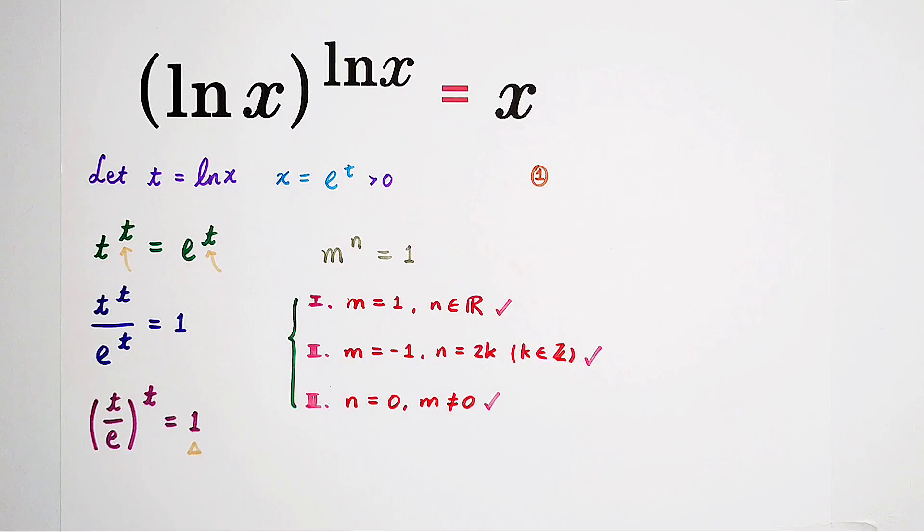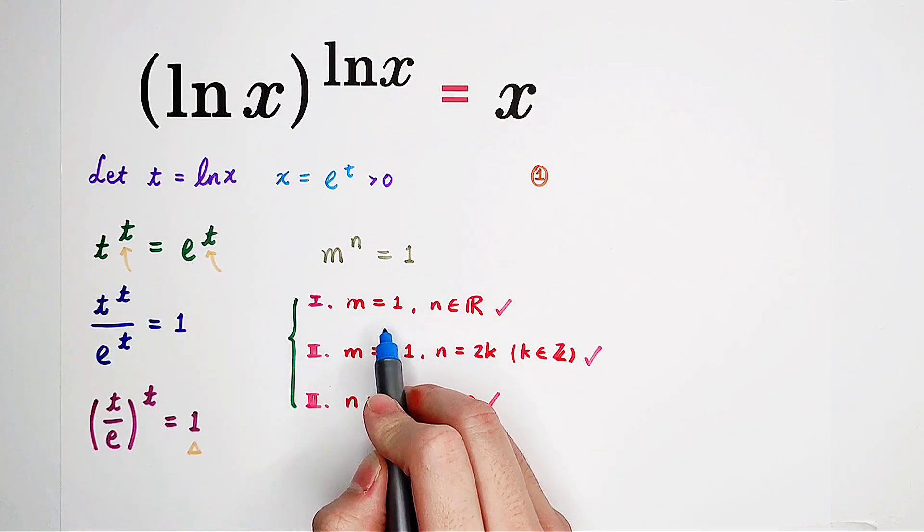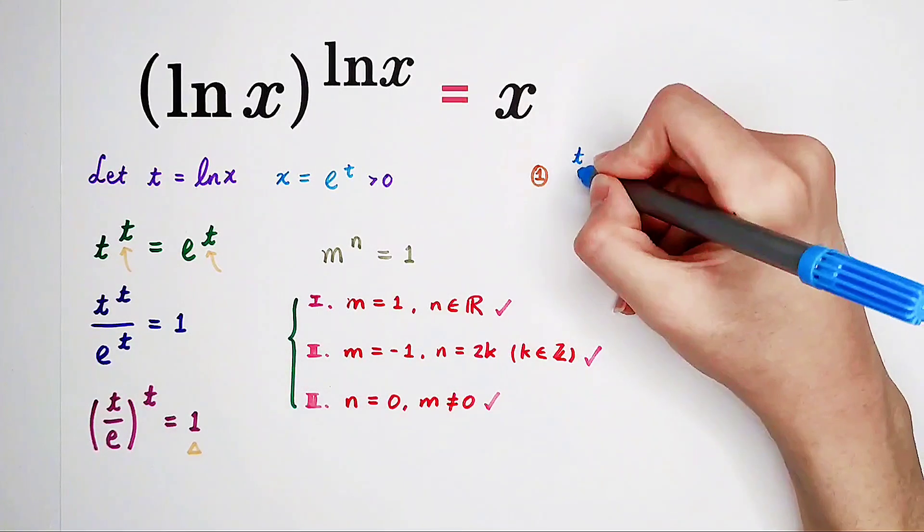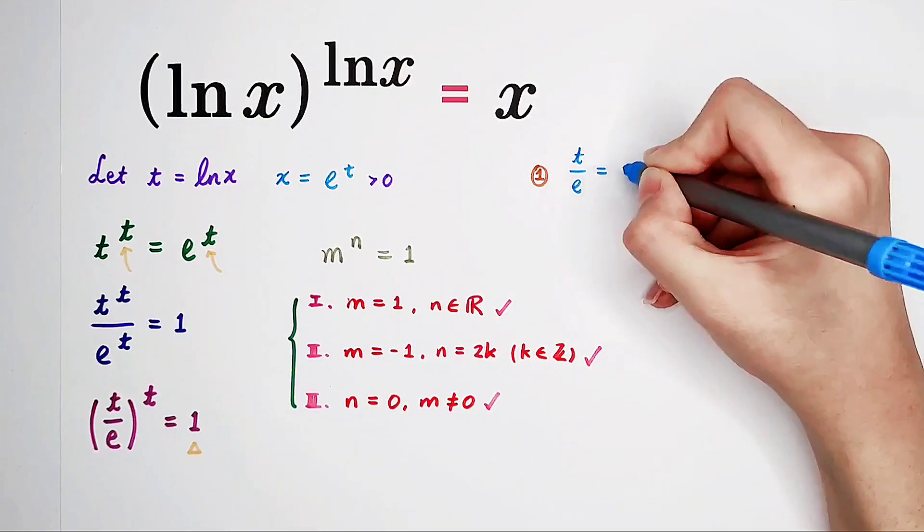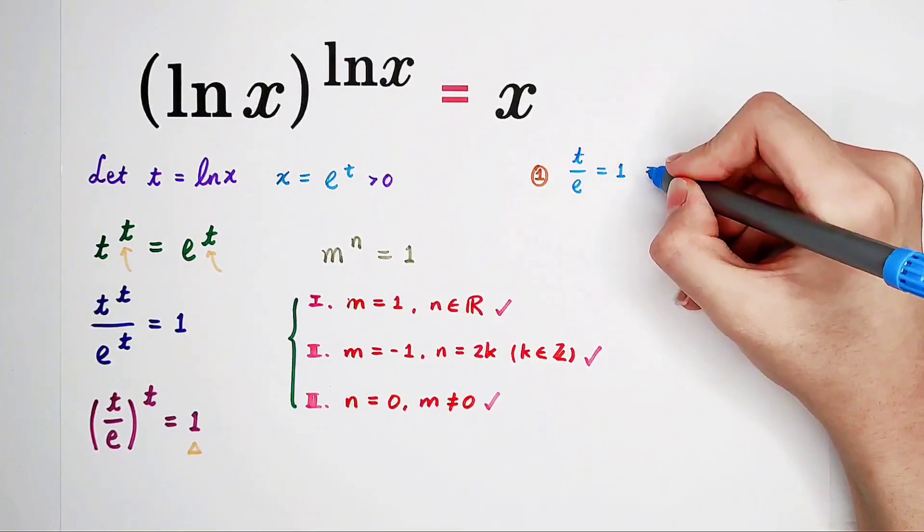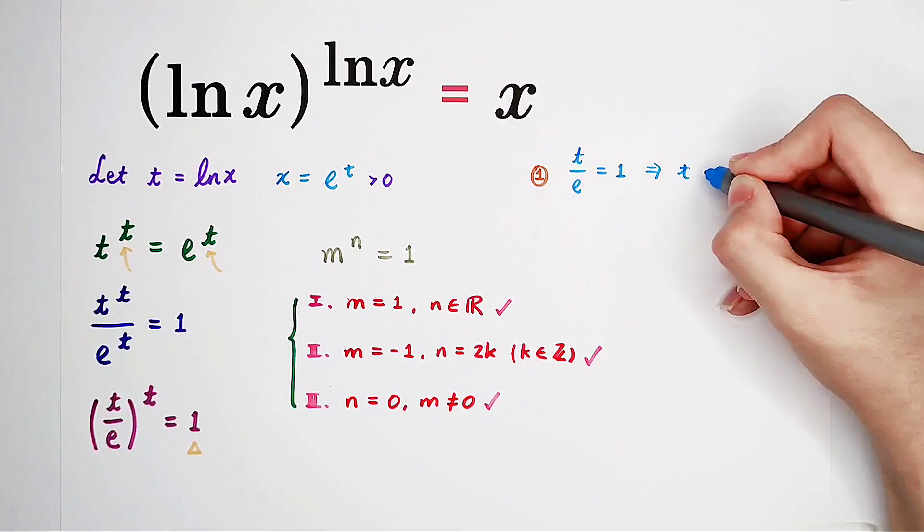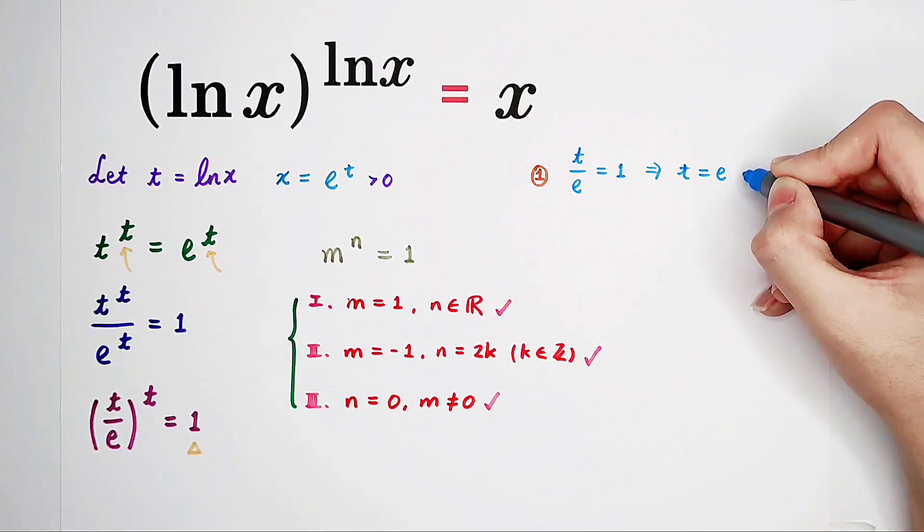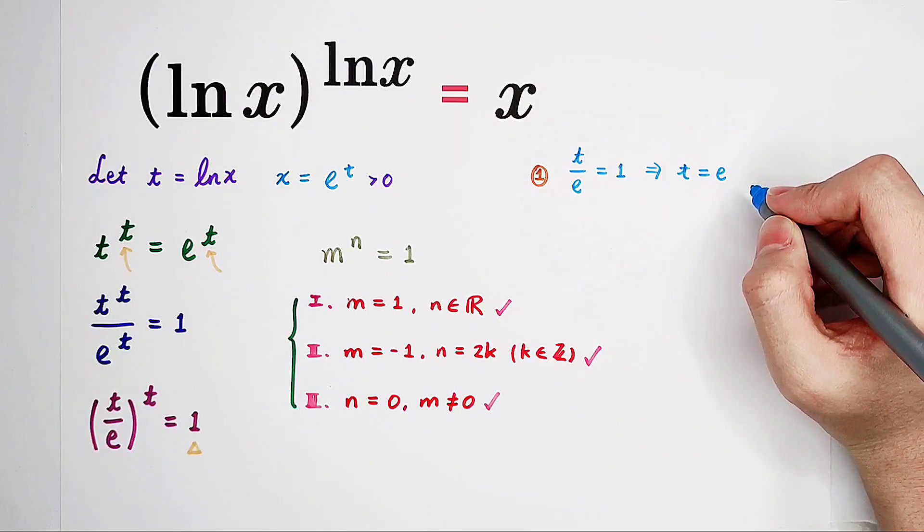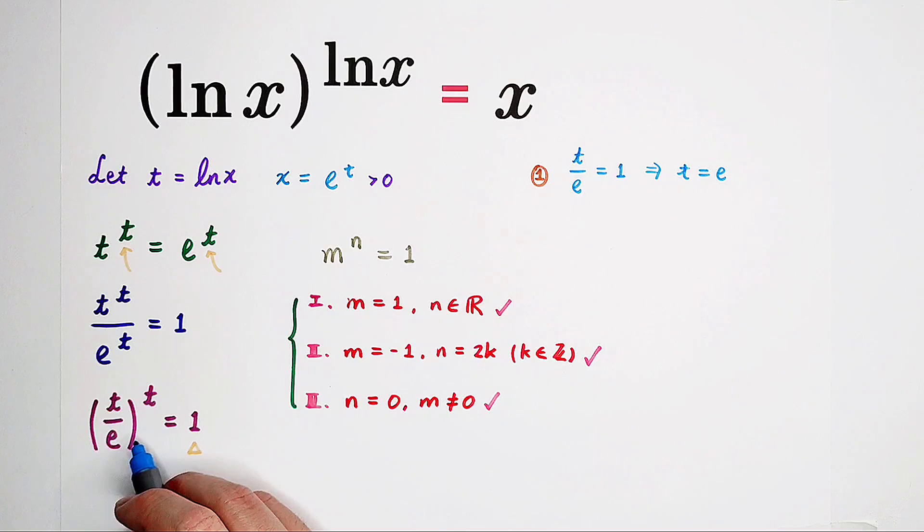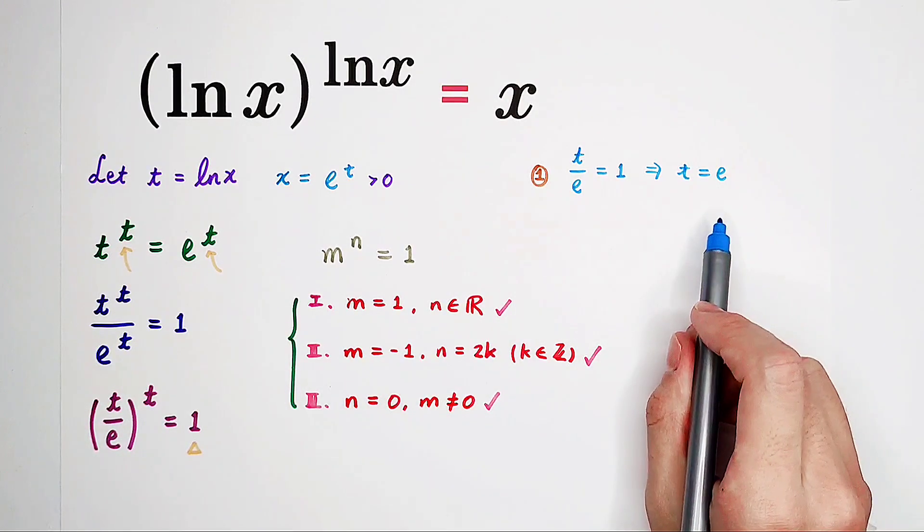In the first case, it says m is 1. That means the base is equal to 1. So that means t over e equals 1. And then we can get t is actually e. Well, e is a real number, so it implies that t equals e is a solution.